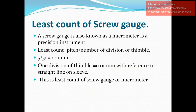The least count is the minimum value which can be measured with any particular measuring instrument. For the screw gauge, the least count is equal to pitch over number of divisions of the thimble, which is 5 over 50, equal to 0.01 millimeter. This means one division of the thimble equals 0.01 millimeter with reference to the straight line on the sleeve.